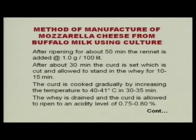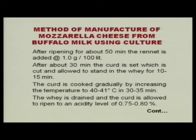The curd is cooked gradually by increasing the temperature to 40 to 41 degrees centigrade over 35 minutes. The cooking temperature here is higher than for cheddar cheese — 37 to 38 degrees — because the starter culture uses thermophiles which can grow at slightly higher temperatures. The whey is drained and curd is allowed to ripen until acidity reaches 0.7 to 0.8 percent. An acidity of 0.8 percent lactic acid gives better product quality.